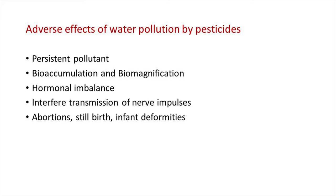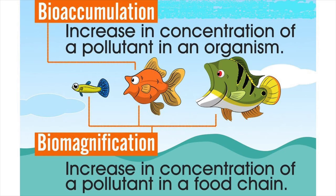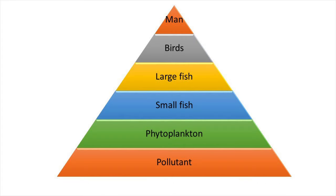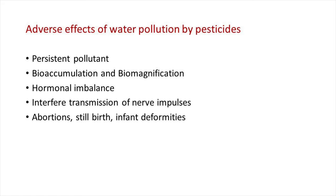In organisms placed at the end of the food chain like fish, aquatic birds and man, pesticides accumulate in very high concentrations. They are highly toxic and lethal to all types of living organisms including animals and plants. A major adverse effect of water pollution by pesticides is that pesticides are persistent pollutants; they also undergo bioaccumulation and biomagnification. In humans, pesticide residues persist in various parts of the body.